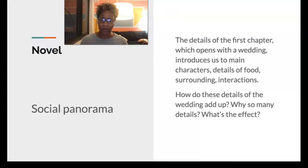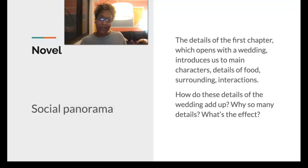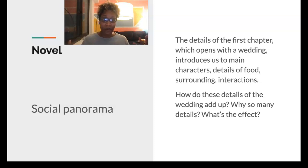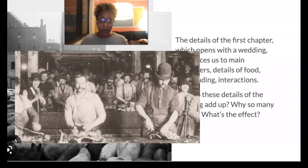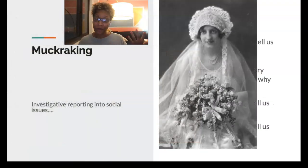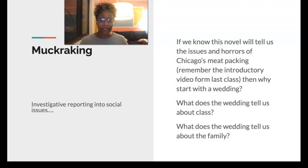A novel gives us the social panorama of life, and from the beginning we're definitely getting a panorama of the family that Jurgis and Ona are forming on their wedding day. In the first chapter we have this huge feast — all these details of the food, the surroundings, the interactions. I want us to consider how these details add up, what effect they have, what kind of mood they provide, and what expectations they set up. Considering this is a novel that will focus on meatpacking and the social challenges the immigrant workforce faces in America, we have to ask: why start with the wedding? What does this celebratory moment tell us about class, about family, and how does it set up the muckraking that will follow?